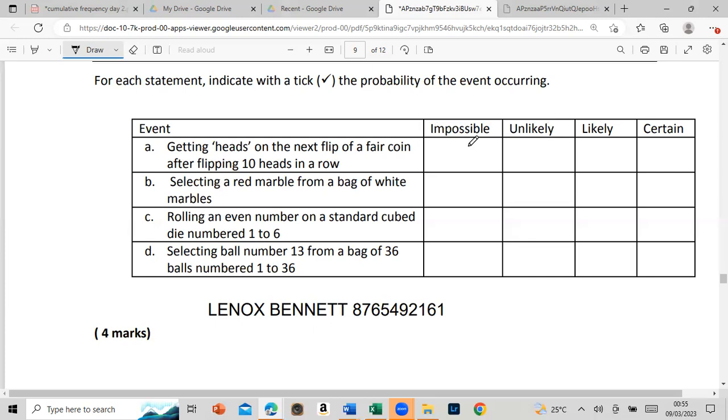Likely or certain, whichever you think. Let's read it: getting heads on the next flip of a fair coin after flipping 10 heads in a row. What's the next one? Is it impossible to get a head? No, it's not. Is it unlikely? No, it's not. I would say it is likely, even though it's 50/50, because a coin only has two options - either head or tail. So I can say it's likely.